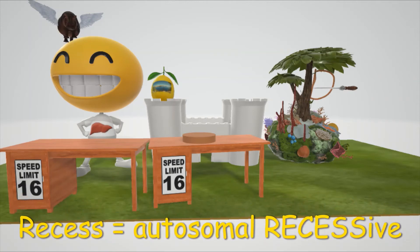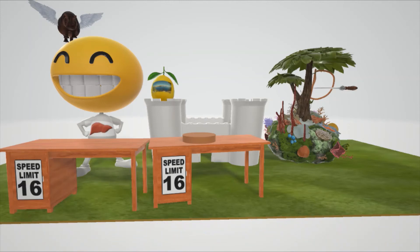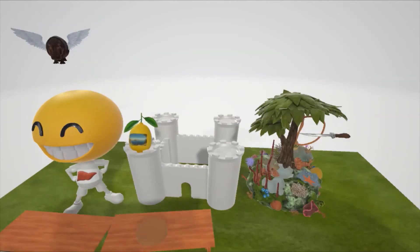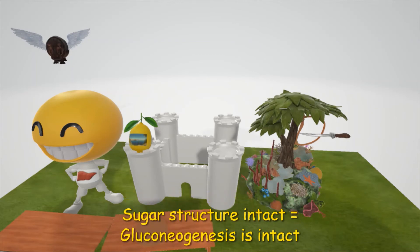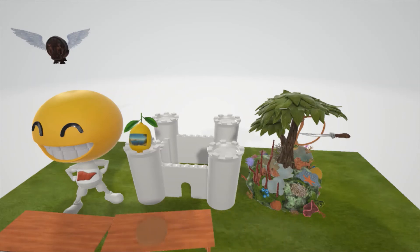There's Reese's chocolate sitting on top of the desk, which helps remember autosomal recessive. His structure that he made out of sugar, which is intact, helps us remember that gluconeogenesis is actually intact in this disease, as opposed to in von Gierke disease. This is because the body still has the ability to convert glucose-6-phosphate to glucose from other sources such as lactate and glycerol.